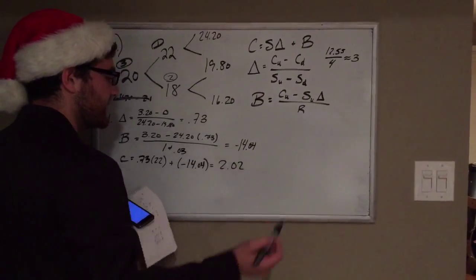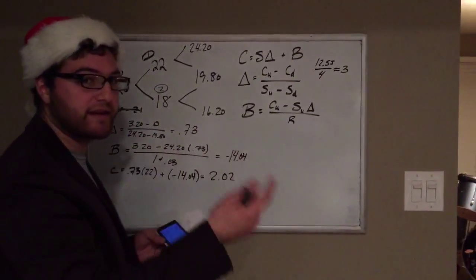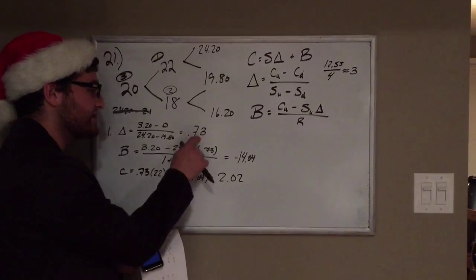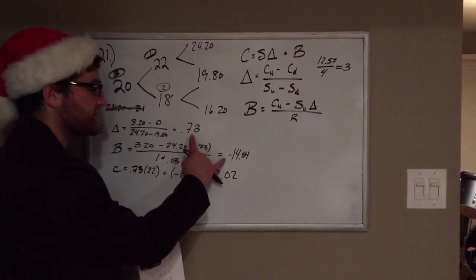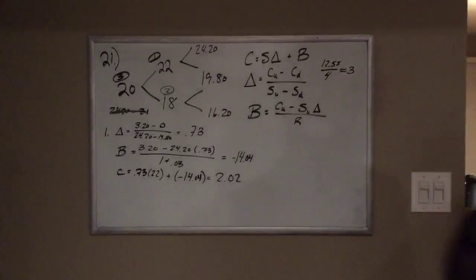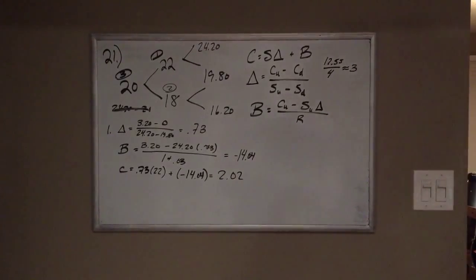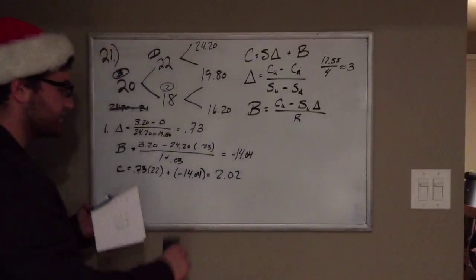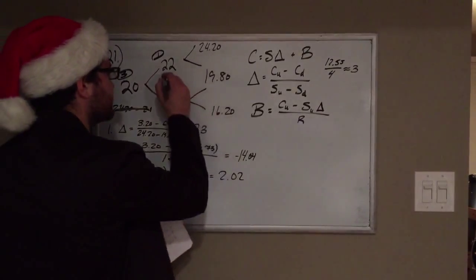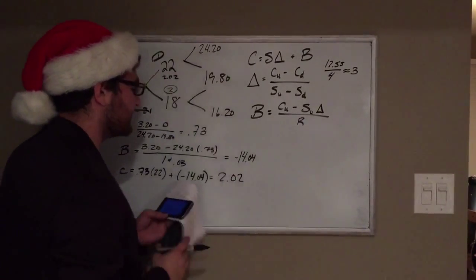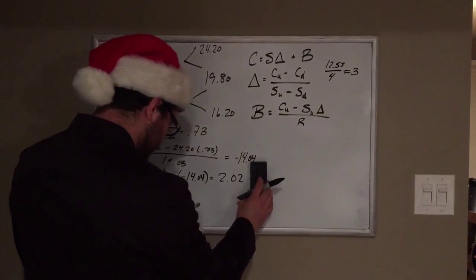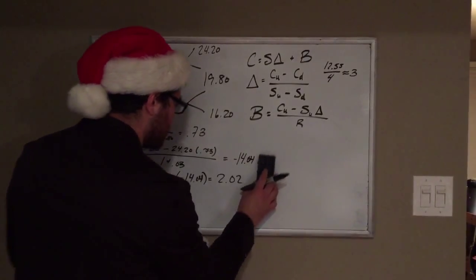Remember that number, and I'm going to erase this so I can do the next one. Obviously on your exam, he wants to see both numbers as preferable. He wants to see the hedge ratio as it states in the actual problem. So 2.02 is the price. We'll put it down here for later.